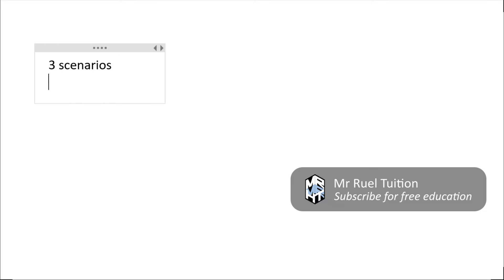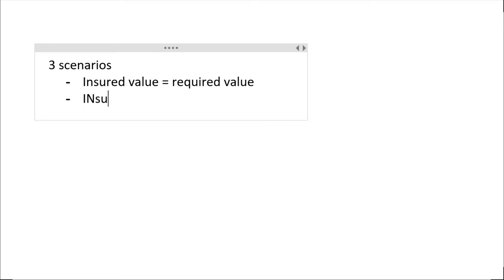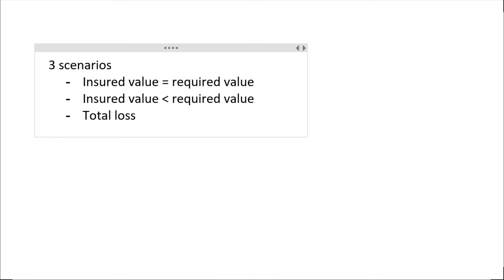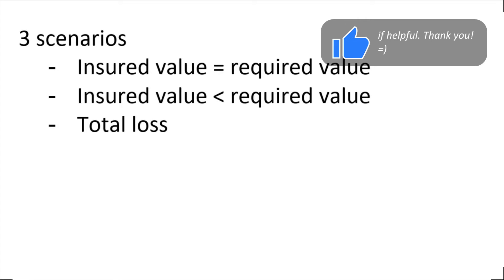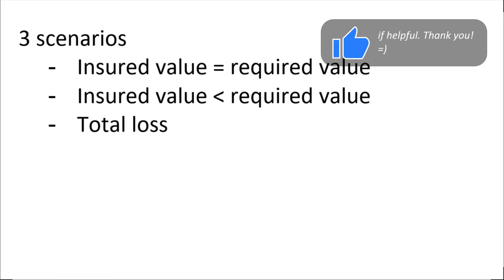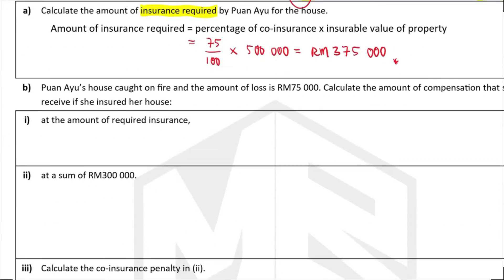Based on this required insurance amount, the compensation received depends on three different scenarios: first, if the insured value equals the required value; second, if the insured value is less than the required value; and third, in the case of a total loss. All three scenarios will have different values of compensation.